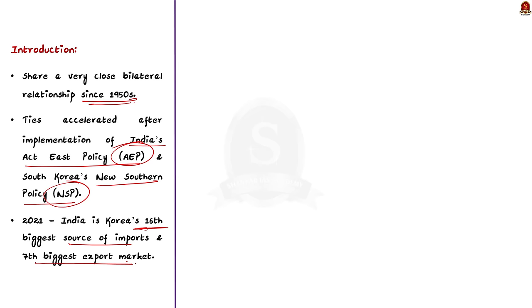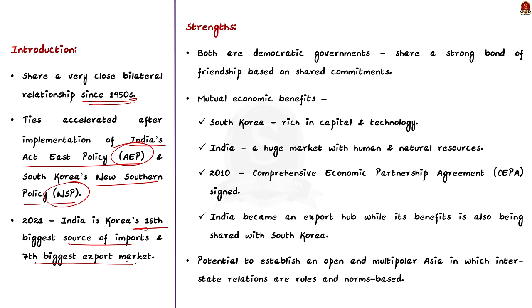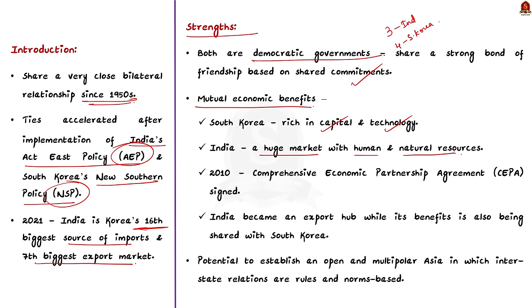You can split the main body into three parts: strengths, opportunities, and challenges. For strengths: both countries are democratic governments — India is the third largest economy and South Korea is the fourth largest economy in Asia. They share a strong bond of friendship based on commitment to democratic values. The second strength is mutual economic benefits: South Korea is rich in capital and technology while India has a huge market and human resources. This economic advantage led to the signing of a Comprehensive Economic Partnership Agreement in 2010. Finally, both nations have the potential to establish an open, multipolar Asia with rule-based and norms-based interstate relations.